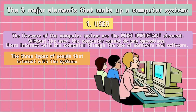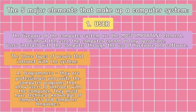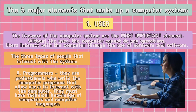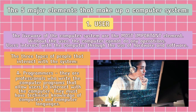There are three types of people that interact with the system. First, the programmers. They are the professionals who write the computer programs that allow users to interact with the computer. They must have technical knowledge of computers and computer languages.